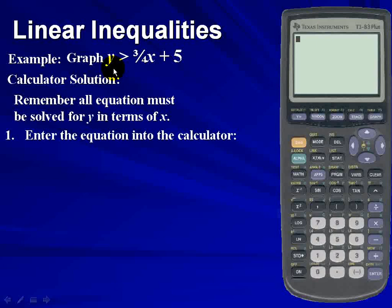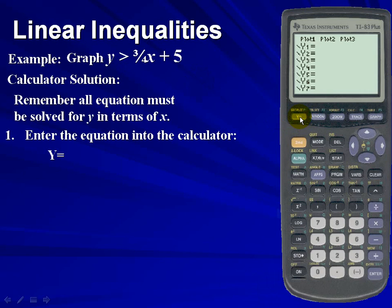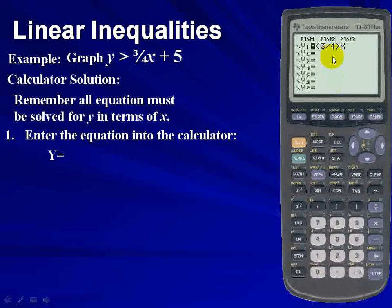Next, we'll enter the equation into our calculator. We'll enter the Y= area and put in our function (3/4)x + 5. I'm going to put my fractional coefficient within a set of parentheses - that's (3/4) times x plus 5.